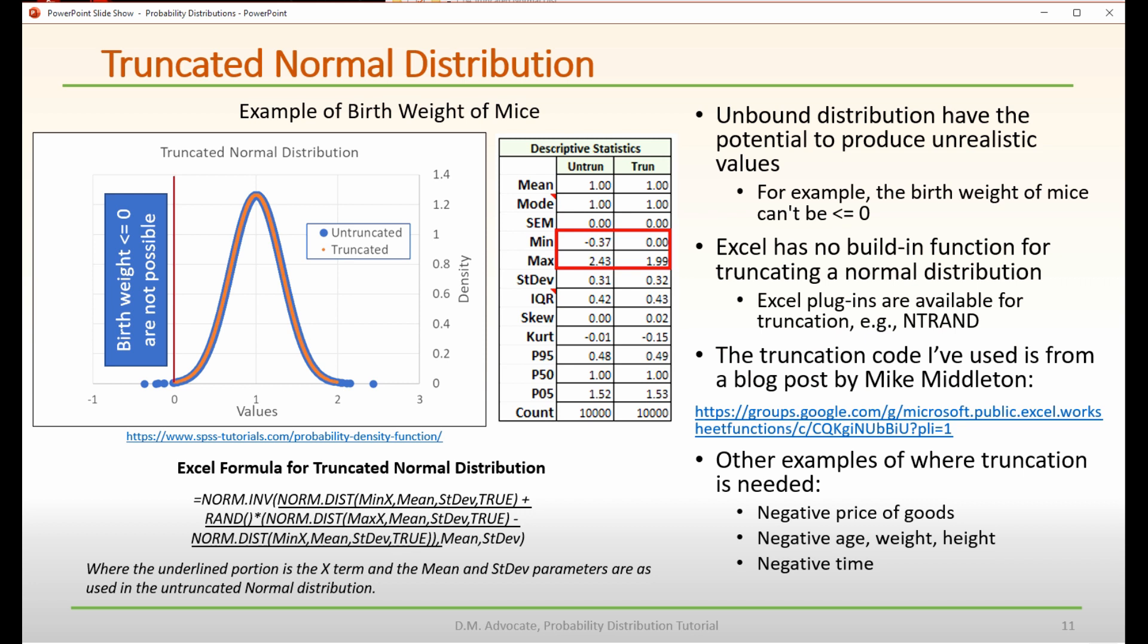For example, the birth weight of mice can't be less than zero. And here we're looking at an example in this chart where we have some birth weights that are less than zero, represented by the blue dots.